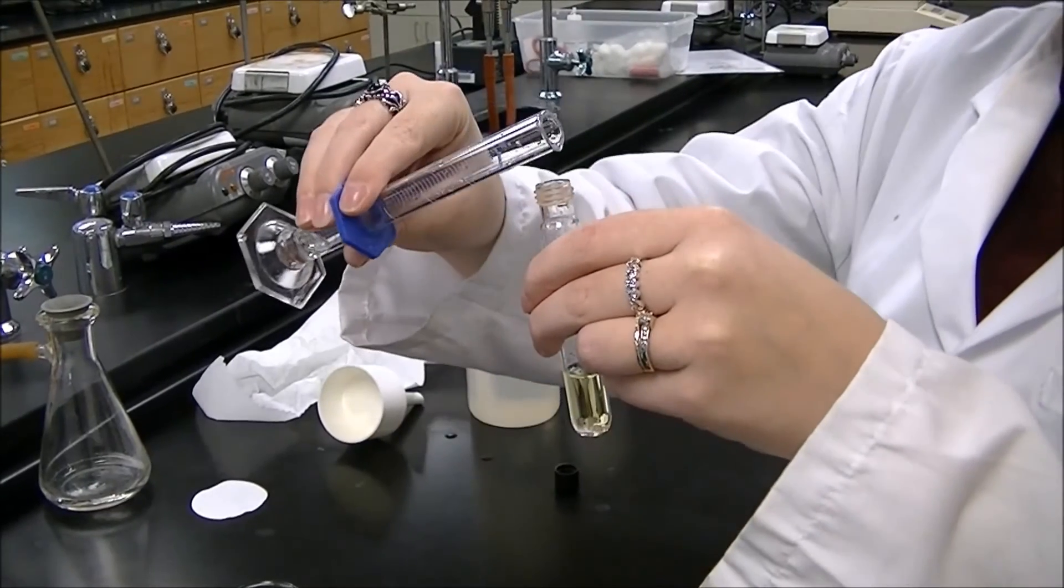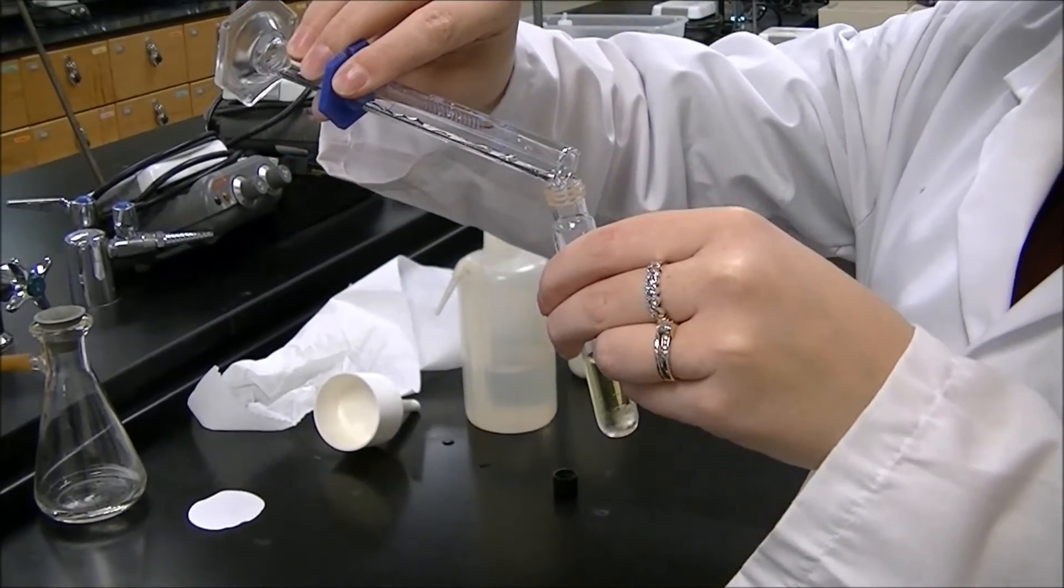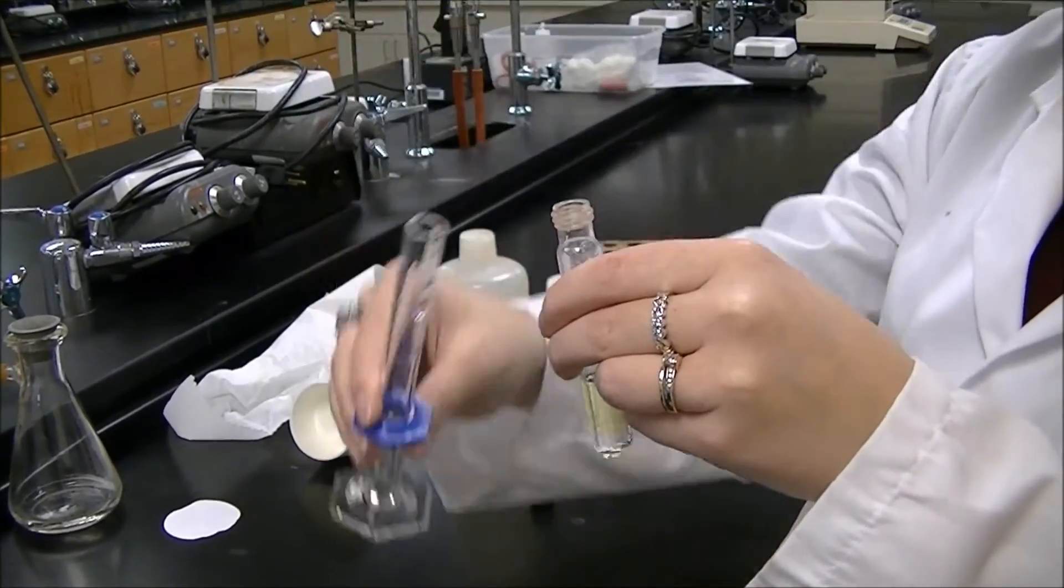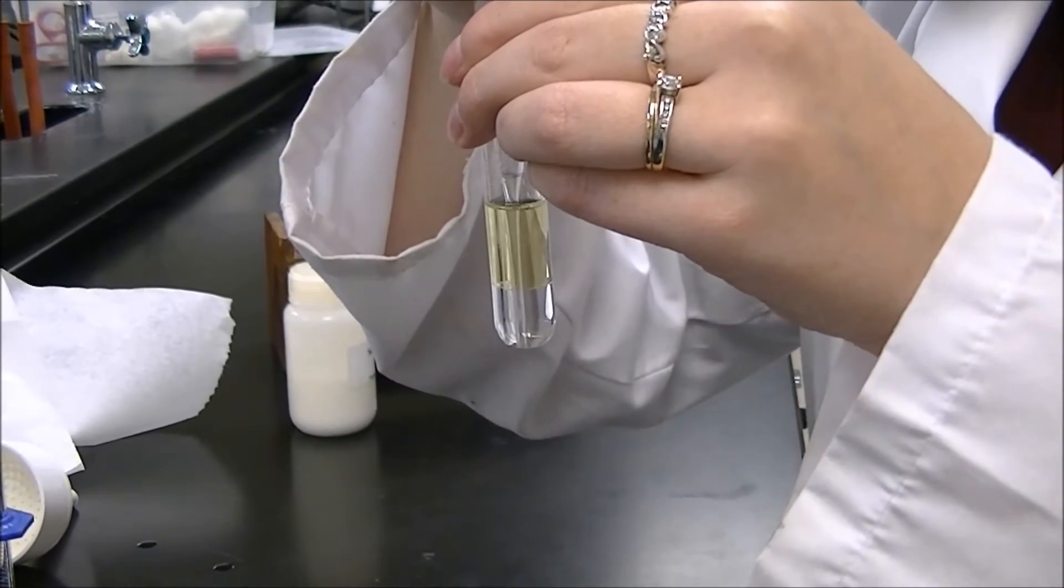To the organic layer left over in the centrifuge tube, we're going to add two portions of 1 milliliter of water. After washing, you'll remove the bottom aqueous layer for disposal.